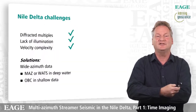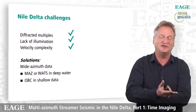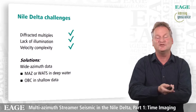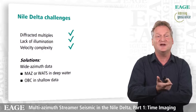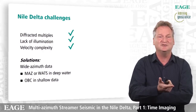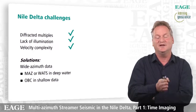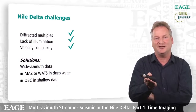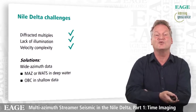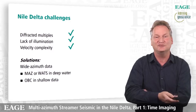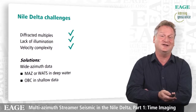In summary, the Nile Delta challenges were diffracted multiples, lack of illumination, and velocity complexity. What I've shown is that multi-azimuth seismic gives a better handle on diffracted multiples and does improve illumination as well. The velocity complexity, however, we haven't really nailed yet. The trim statics we applied to flatten gathers do work, but don't solve more complex velocity issues — for that we really need to go to depth imaging, which is covered in the part two presentation.